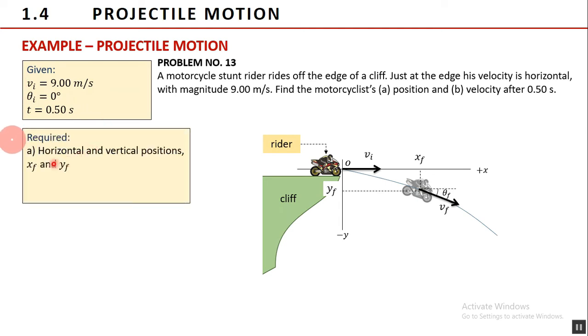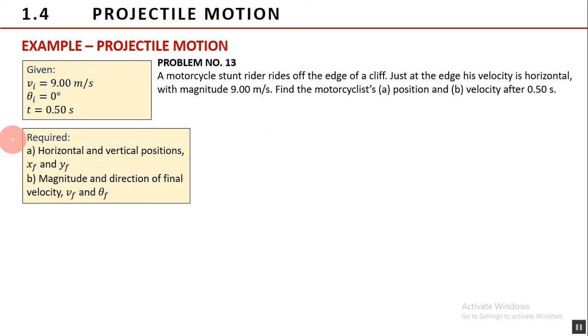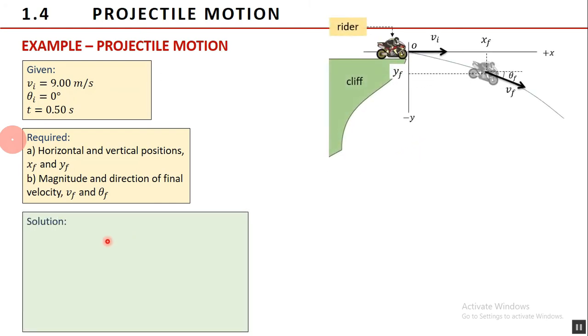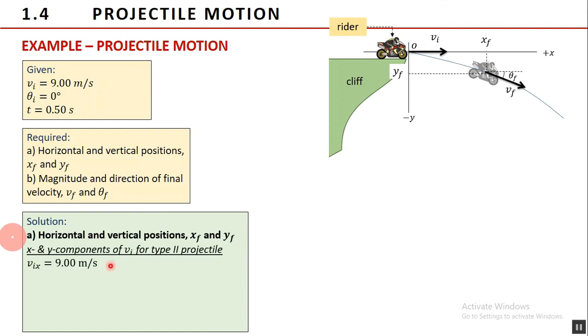For the required quantities, the problem requires us to solve for the horizontal and vertical positions, x sub f and y sub f. Also, the magnitude and direction of final velocity v sub f and theta sub f, respectively. Our preliminary solution is to find the x and y components of the initial velocity. We have mentioned earlier that this is a type 2 projectile, therefore the x component of the initial velocity v sub i x is automatically 9 meters per second while its y component is 0.